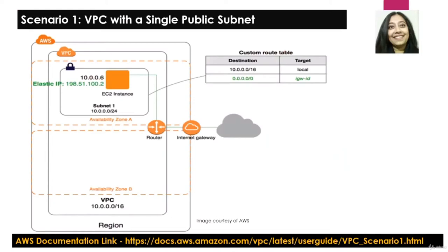Before we jump into the demo, let us review through this architectural diagram to understand what all we need to create in order to achieve this. In AWS, in a specific region, we are expected to create a VPC.